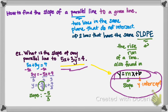Negative 5 thirds is the slope of any line parallel to 5x plus 3y equals 4. Thanks!